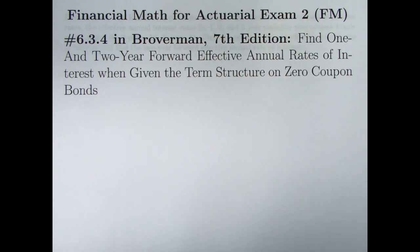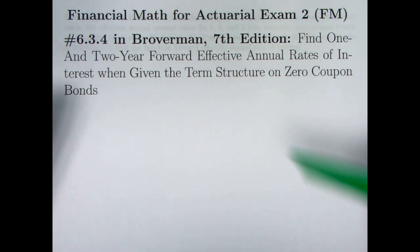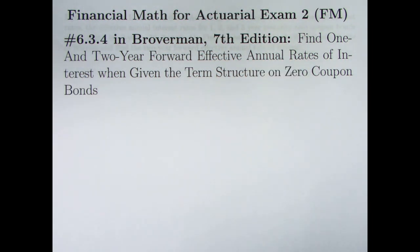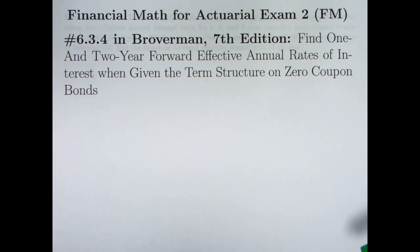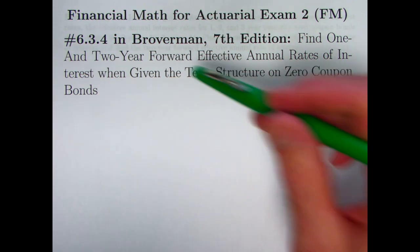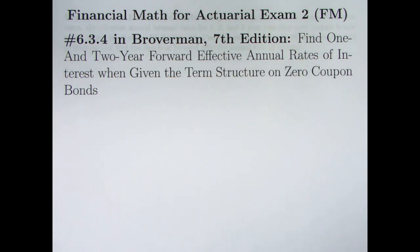Hi, welcome to my 144th video on financial math for actuarial exam 2. We're going to do problem 6.3.4 from Broverman in this video. We'll be finding one and two year forward effective annual rates of interest, with emphasis on the word forward, when we are given the term structure on zero coupon bonds.